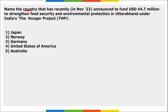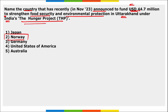Norway announced funding of $44.7 million to strengthen food security and environmental protection in Uttarakhand under India's The Hunger Project. This funding will be valid for the next three years, until September 2026, and Norway will aid in promoting food security by providing productivity support for small-scale food producers.